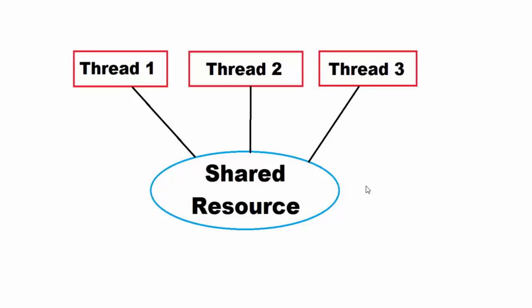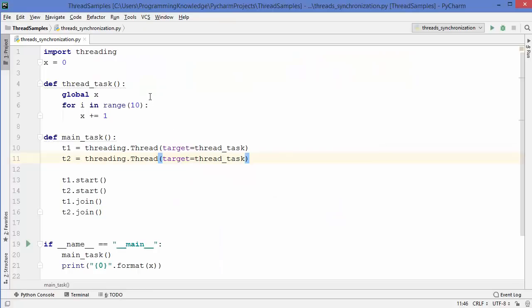As long as all these threads are accessing this shared resource one by one, not at the same time, everything will work fine. But the problem arises when two or more threads try to access the same global variable or shared resource at a particular time, and this kind of situation is called the race condition. A race condition occurs when two or more threads can access the same shared data and try to change the value of that shared data at the same time, making the value of the variable unpredictable.